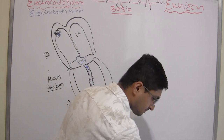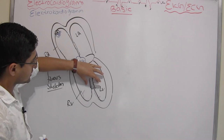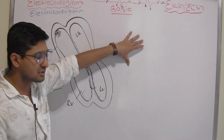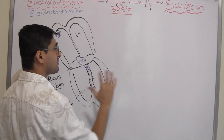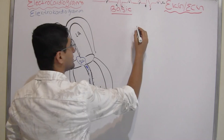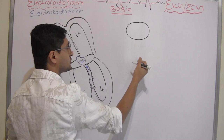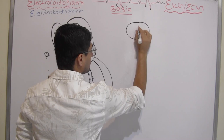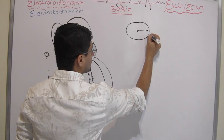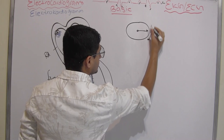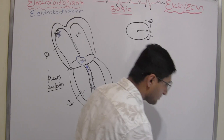Now let's talk about how myocardial cells depolarize and the role of vectors. I'm going to take an ECG machine — a galvanometer — which helps detect electrical current. Let me draw the setup: a central point with a needle, a positive side, and a negative side. I'll draw the positive electrode on one side and the negative electrode on the other, and then draw an atrial cell here with negative electrodes on the A side and positive electrodes on the B side.